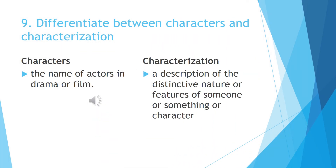The ninth question: differentiate between characters and characterization. A character is the name of the actors in the drama or the film — for example, Mogambo in Mr. India. Characterization is a description or the distinctive nature and features of someone or something relating to the character. In Mr. India, Mogambo, played by Amrish Puri, says the dialogue 'Mogambo Khush Hua.' His behaviour and special behaviour of the character is called characterization.